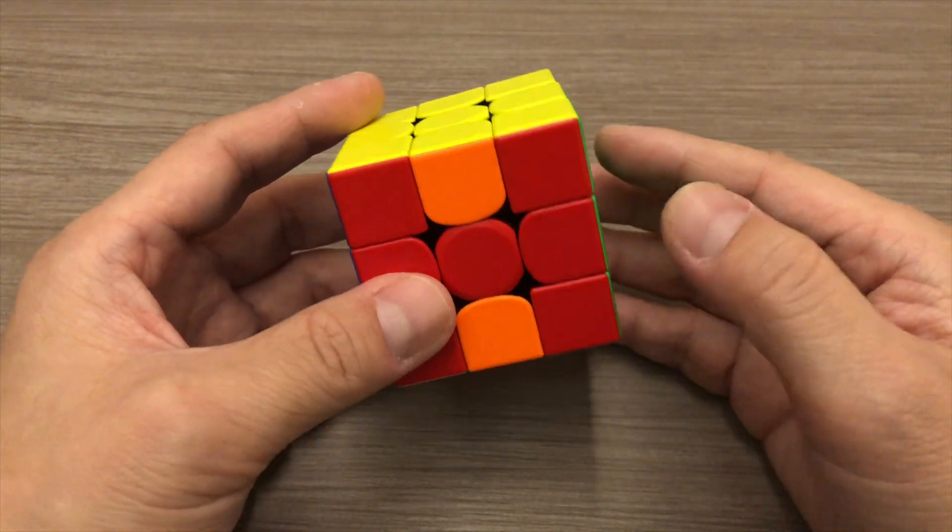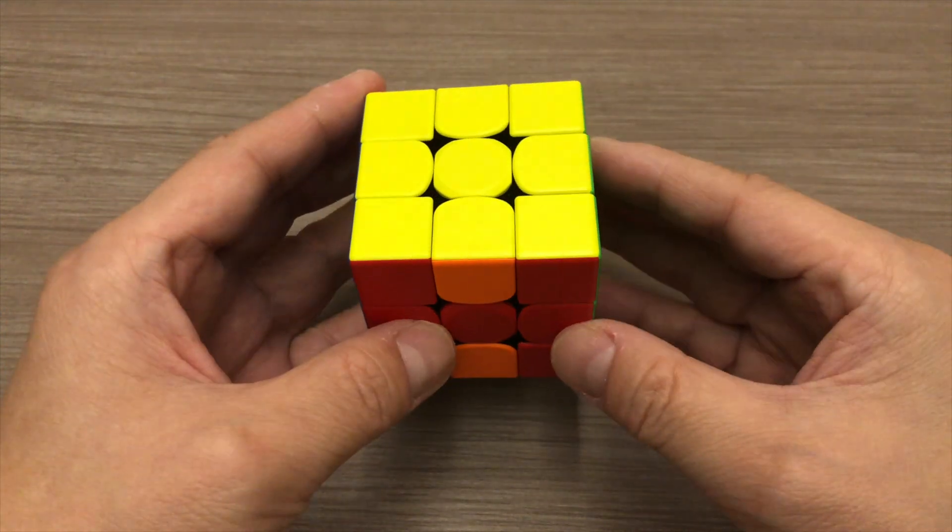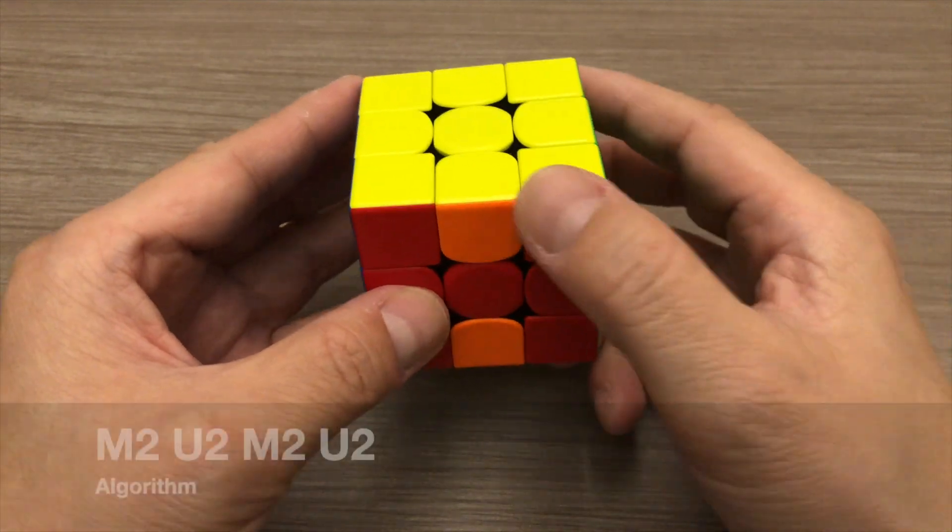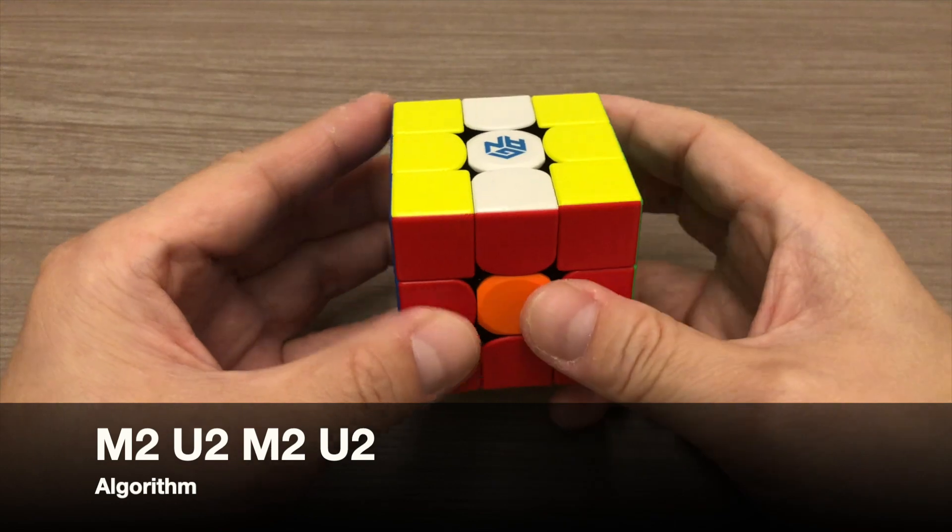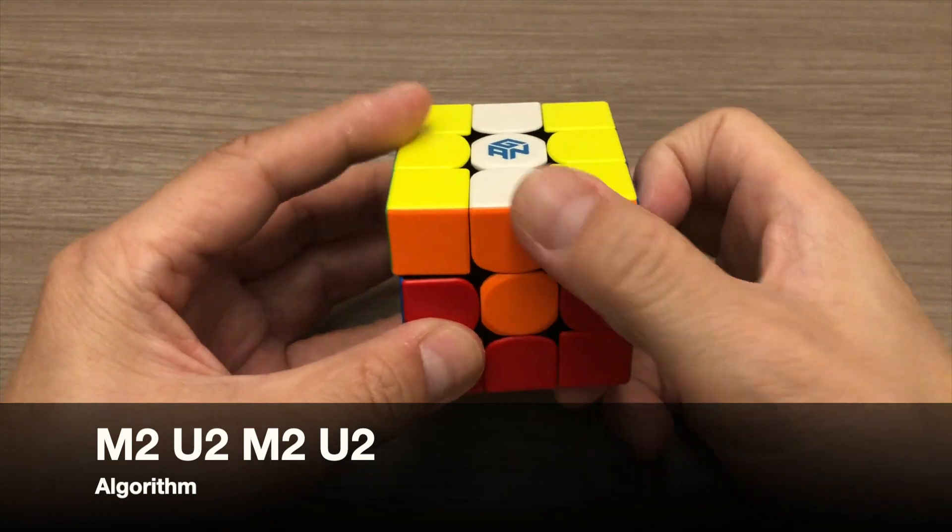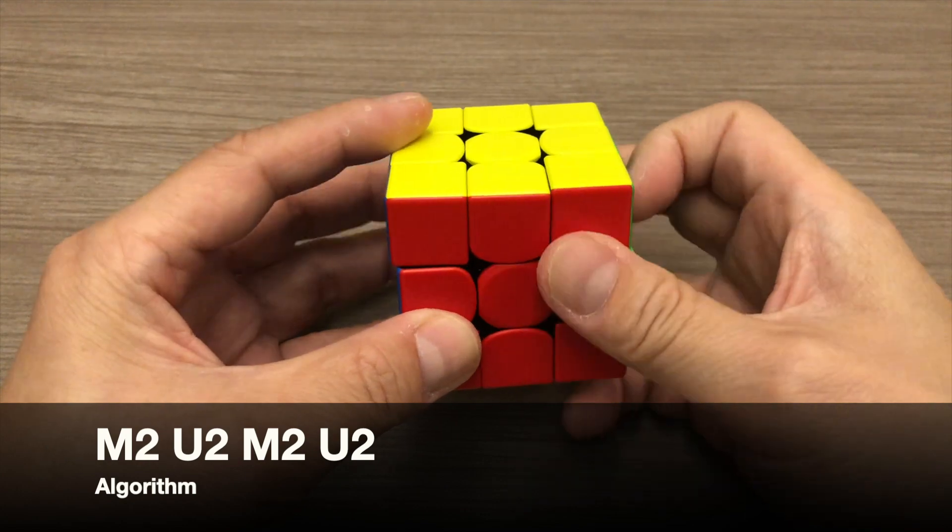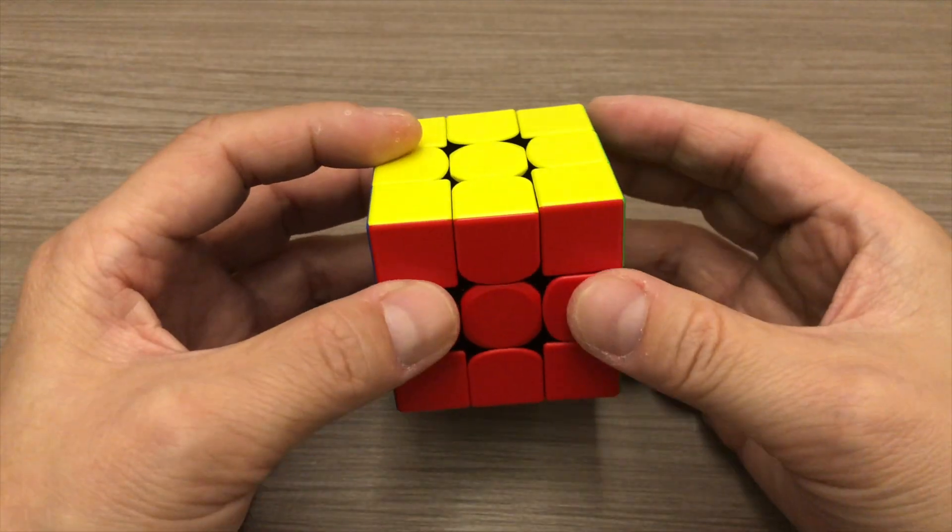Here's how it goes. First, we will position the yellow center piece facing up. Then apply the algorithm M2, U2, M2, U2. And with that, the cube is solved.